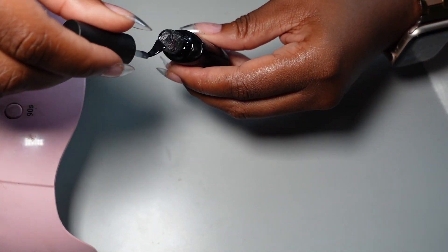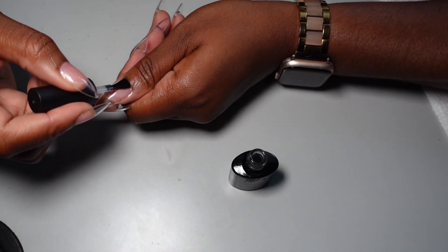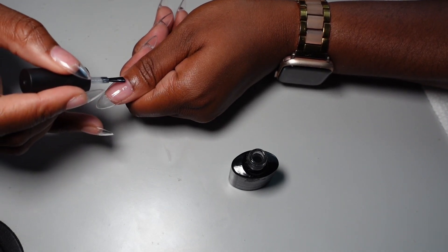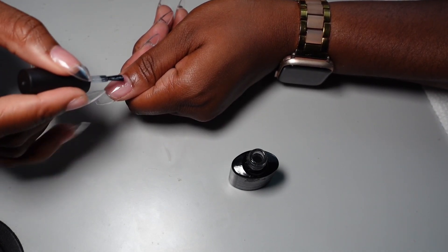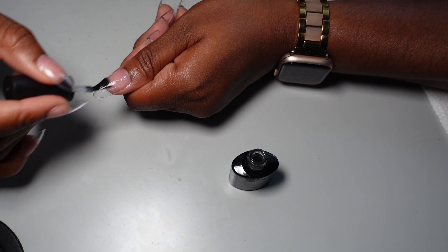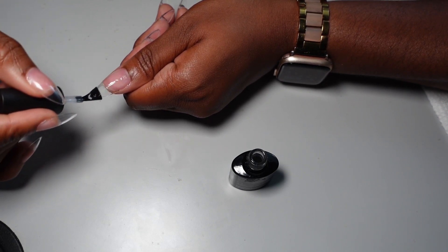And you're going to apply the base coat to each finger, and then you're going to put it under the light for 90 seconds. That's pretty much what they tell you to do if you go to the nail salon. You know, that's what they do. They put the base coat down first.